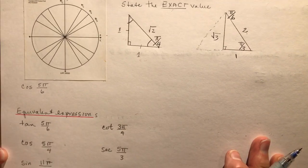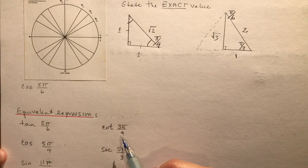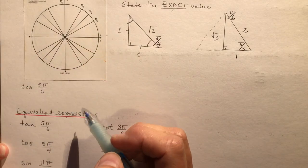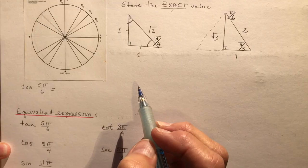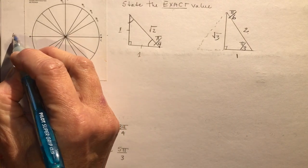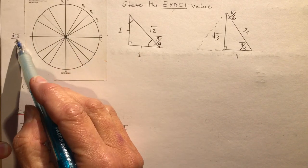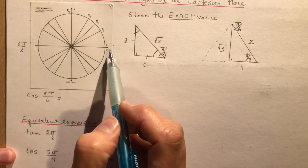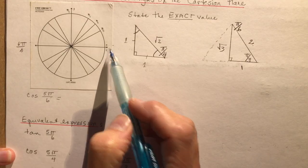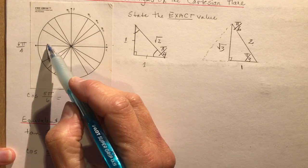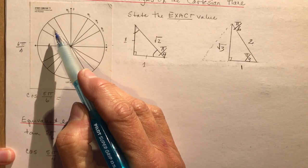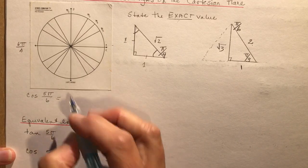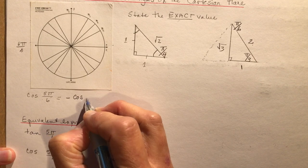The question asks: what is the exact value of cos(5π/6)? First, figure out where 5π/6 is on the unit circle to decide its sign. Since 6π/6 equals π (180°), going back one unit gives 5π/6, which is in the second quadrant. By the CAST rule, only sine is positive in quadrant 2, so cos(5π/6) equals negative cos(π/6).